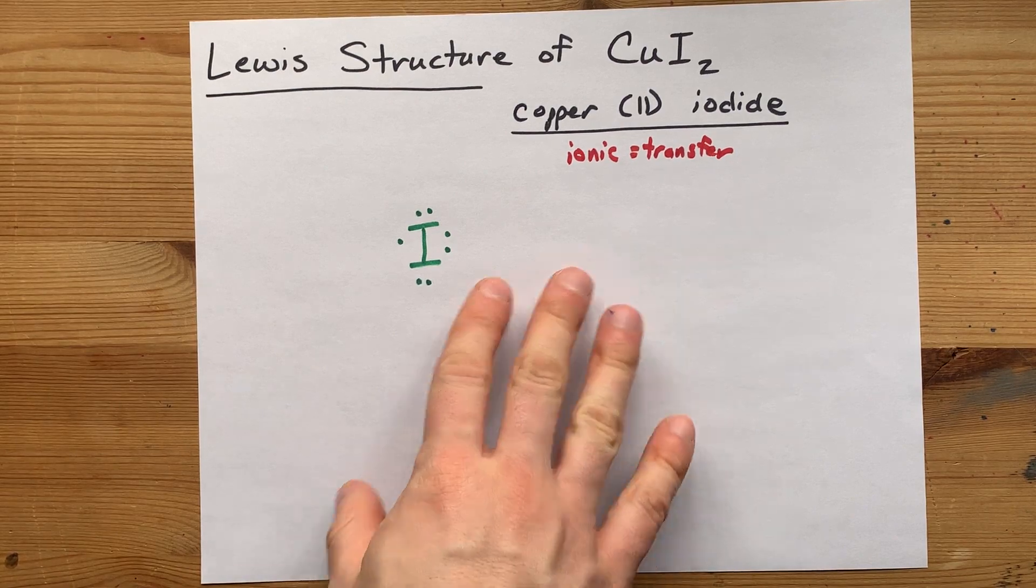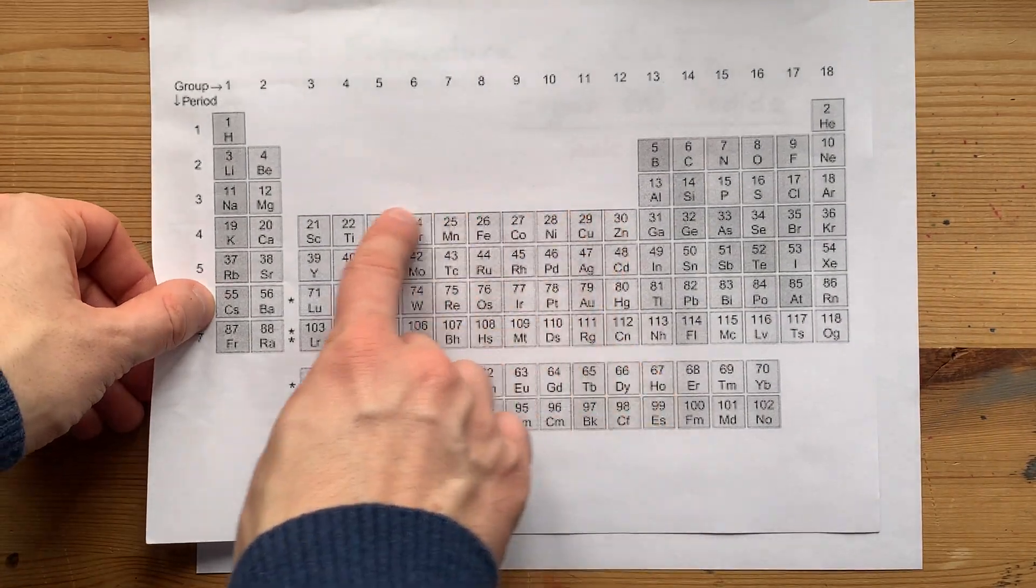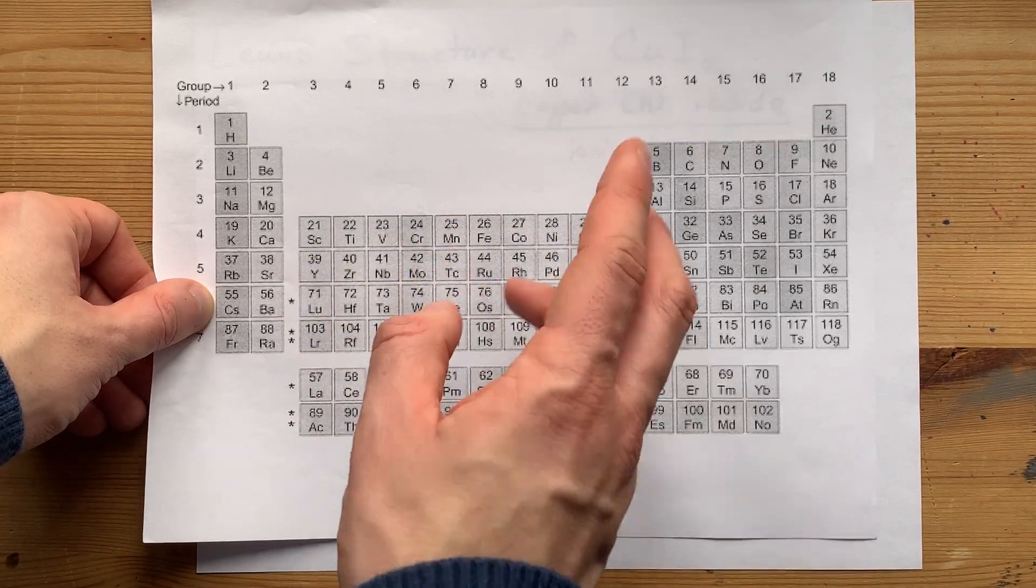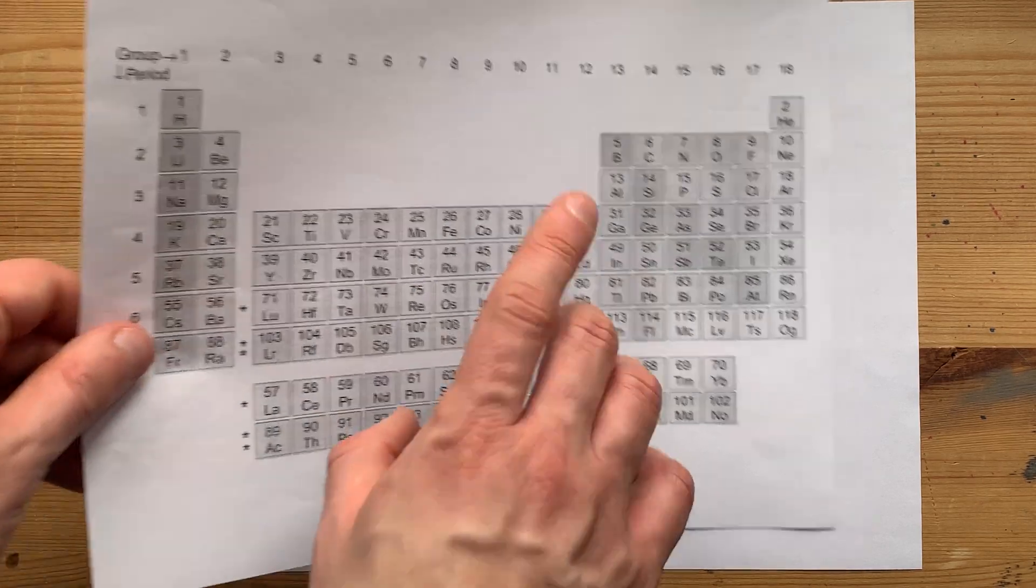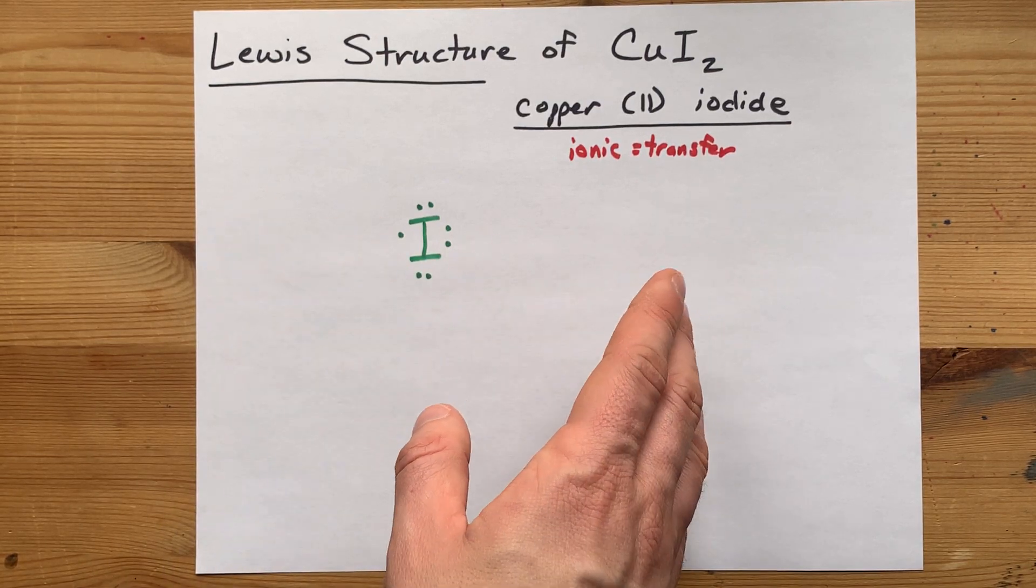Now that shortcut I just showed you—group 17, seven electrons—does not work here in the transition metal section, because each of these can have more than one possible charge. So your job is going to be to determine what the charge on copper is and give it that many valence electrons.